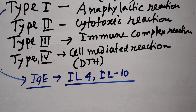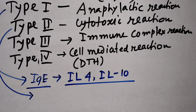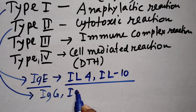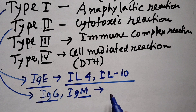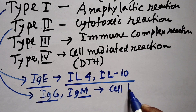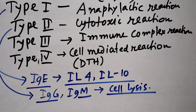The anaphylactic reaction is allergic in nature. This is the result of a Type 2 cytotoxic reaction. The cytotoxic reaction is mediated by IgG and IgM, resulting in cell lysis.